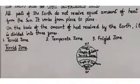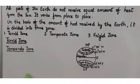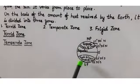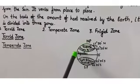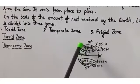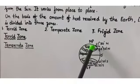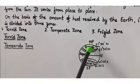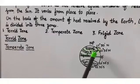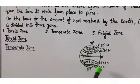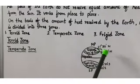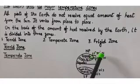Now the second zone is the temperate zone. Look at the picture again. In the northern hemisphere, the temperate zone lies between the Tropic of Cancer and the Arctic Circle. In the southern hemisphere, the temperate zone lies between the Tropic of Capricorn and the Antarctic Circle.